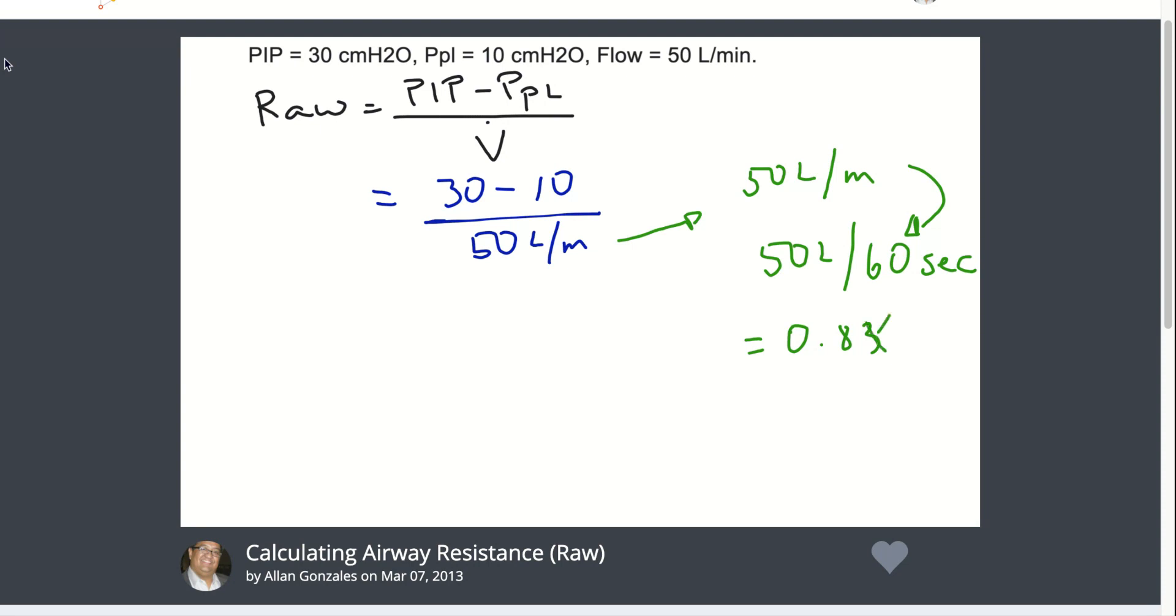So in this particular case, let's round to 0.8 liters per second. So substituting our denominator of 50 liters per minute, converting that into liters per second, our Raw equation is now 30 minus 10 over 0.8.